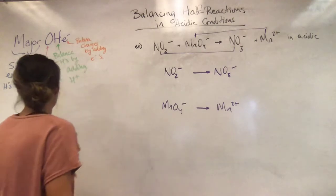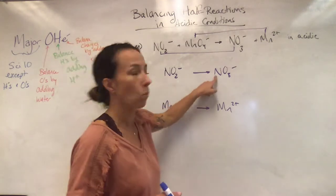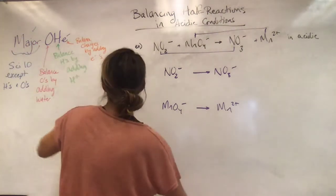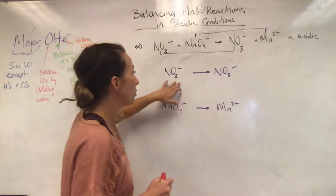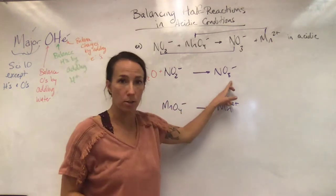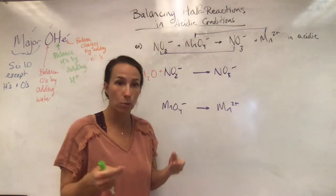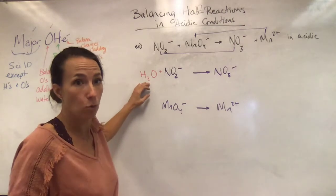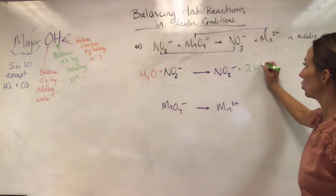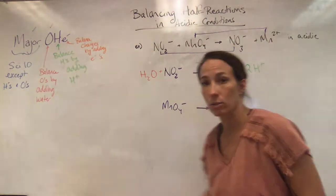Balancing the first half-reaction: NO2⁻ → NO3⁻. Balance your major species — one nitrogen on each side, done. Then balance oxygens by adding water: three O's on the right, two O's on the left, so add one water to the left. Now I have three oxygens on each side. Then balance hydrogens by adding H pluses. Adding that water put two hydrogens in the equation, so I need two H pluses on the right-hand side.